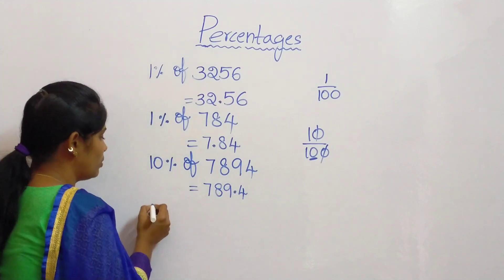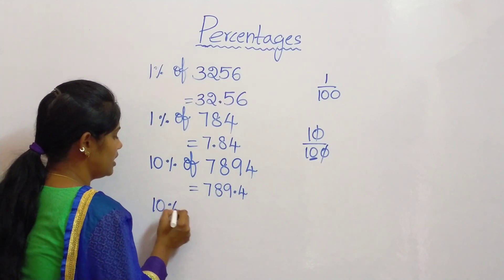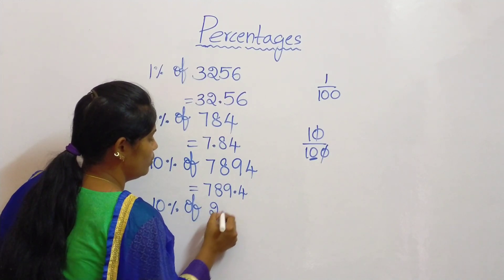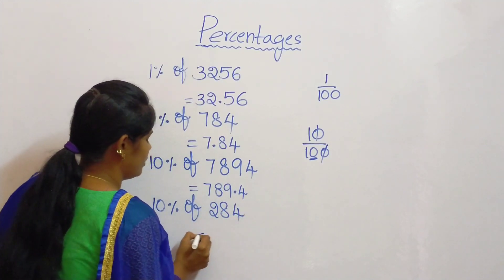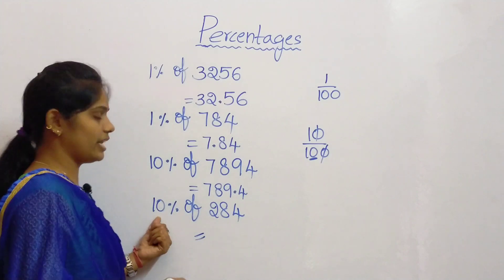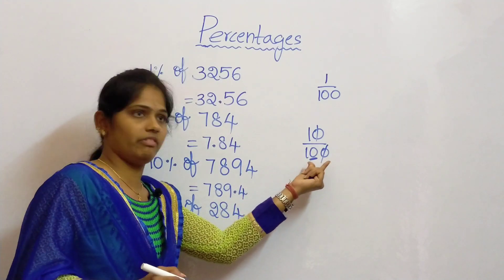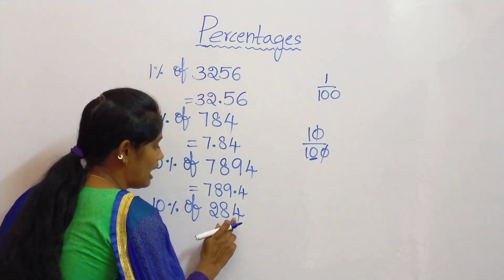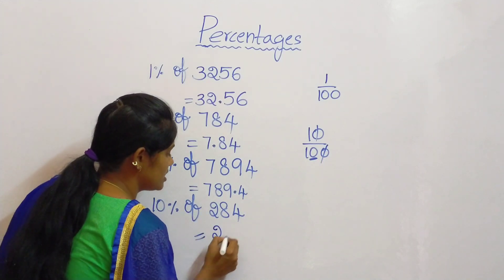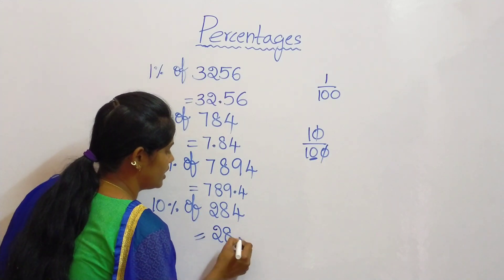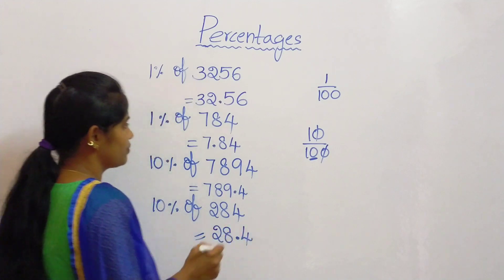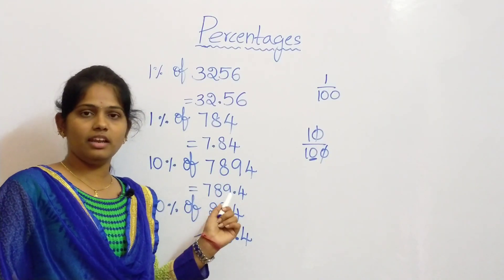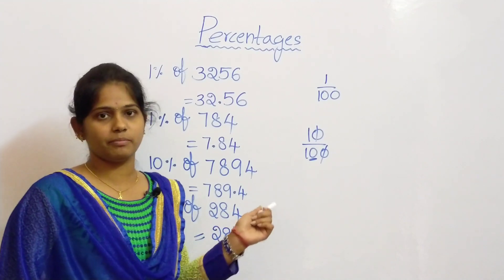Let us take one more example: 10 percentage of 284. As we know, 10 percentage has only 1 zero in the denominator because one zero gets cancelled. So after 1 digit, put the decimal point: 28.4. If you are clear with this 1 percentage and 10 percentage, then learning our trick is very easy.